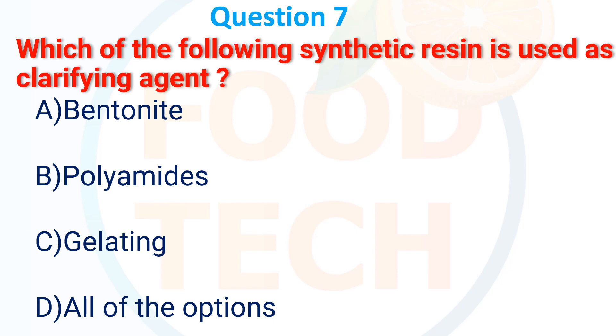Which of the following synthetic resins is used as a clarifying agent? A. Bentonite, B. Polyamide, C. Gelatin, D. All of the options. The answer is B. Polyamide.